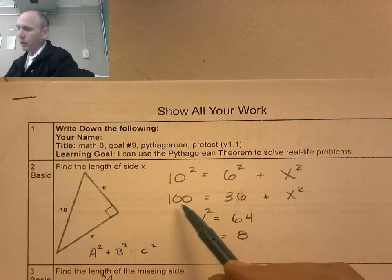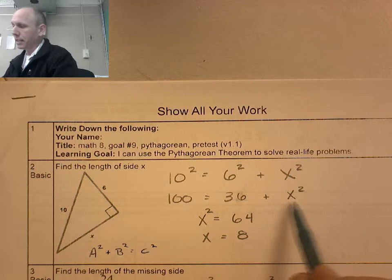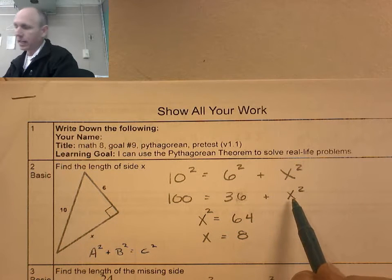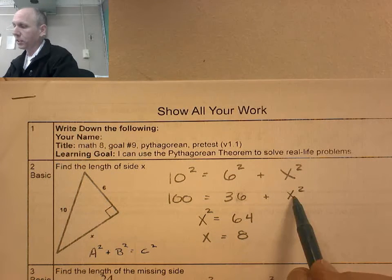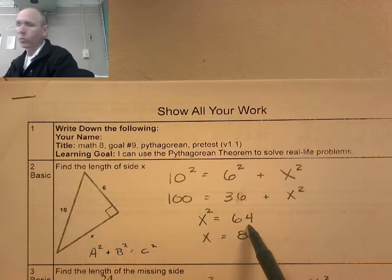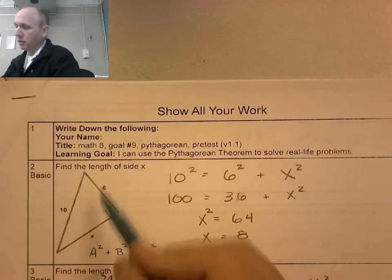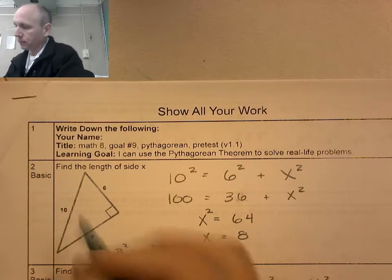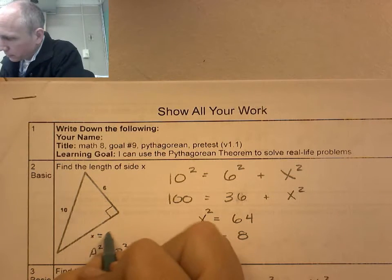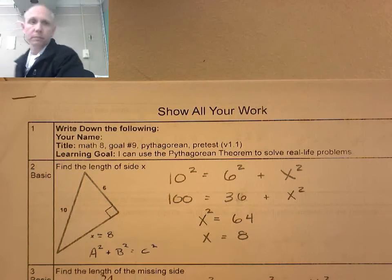So 10 squared equals 6 squared plus x squared. So I square both of those. 100 equals 36 plus x squared. So x squared has to be 64. 36 plus 64 is 100. And then I take the square root of 64, and I get 8. So this would be 8 and 10. There we go.